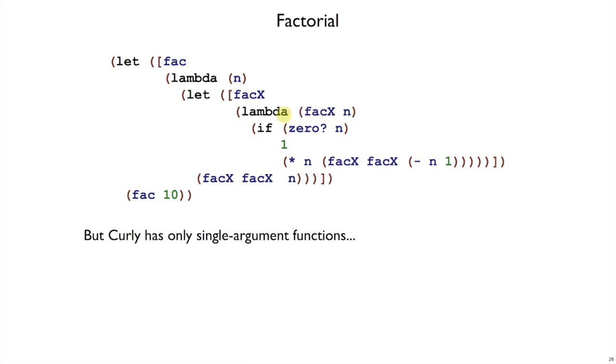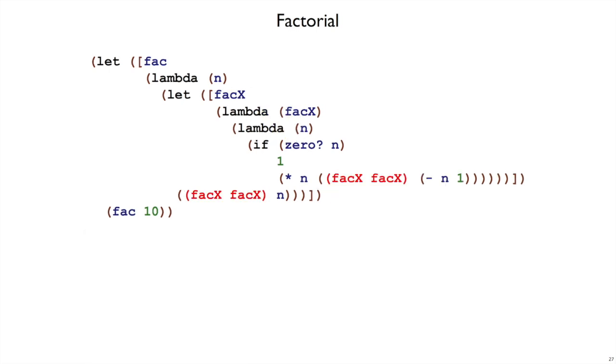We know how to deal with it by just currying FACX. So we change the program this way. FACX now takes FACX, takes itself first, then it returns a lambda where it gets the argument in. And then where we used to call FACX with two arguments, now we curry those arguments. This is moving us in the right direction, it turns out, because now we have the lambda N that we want.